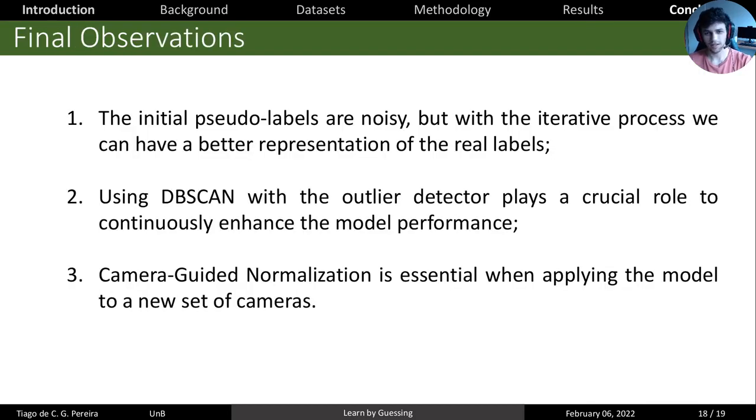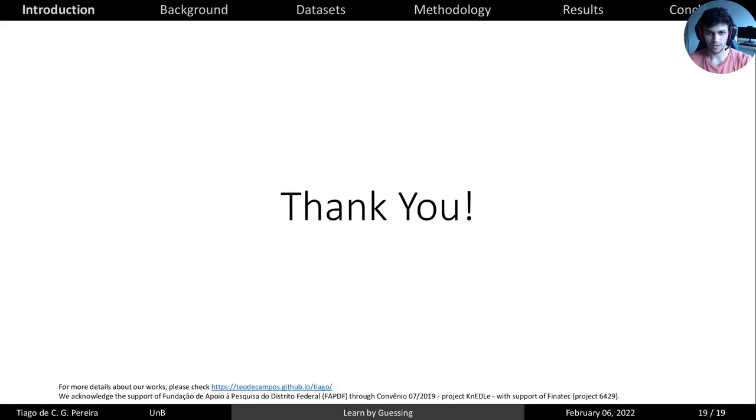Some final observations: even though our initial pseudo labels are noisy, the iterative process with cluster selection and outlier removal allows us to keep improving the pseudo labels at each step, and this really helps us to achieve very good results. The DBSCAN with outlier detector is crucial, because when the outliers are inside the pseudo labels, we have even noisier pseudo labels that don't help us. Also, the camera-guided normalization is essential, because clustering by viewpoints is not interesting for us, and we want to have examples of a subject in different cameras so we can learn this translation. That's all, thank you.